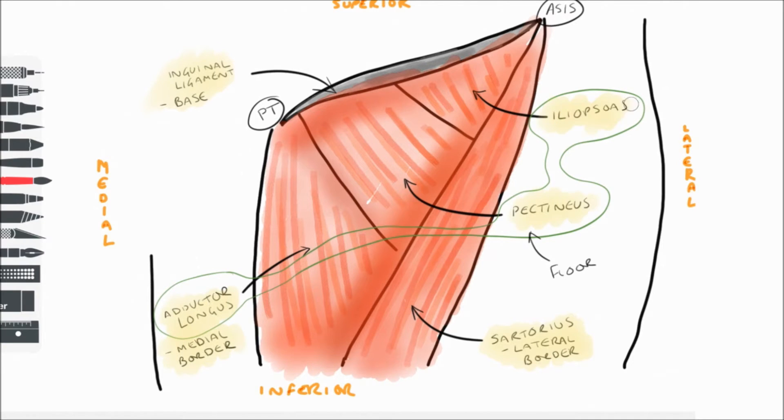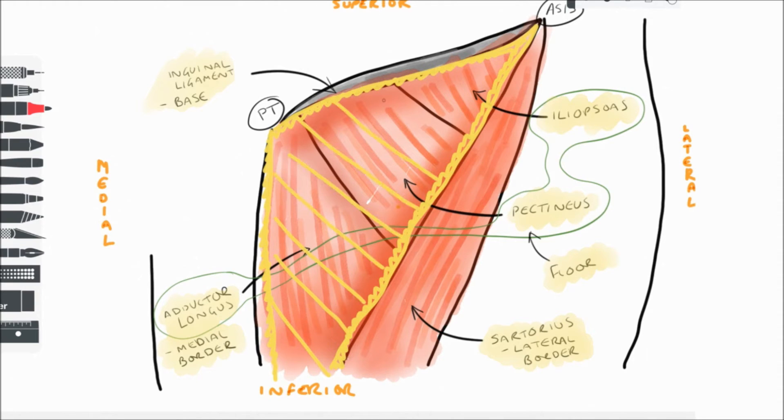To fully define the boundaries of the femoral triangle, I'm now going to add the specific landmarks. Notice that it is in fact the medial borders of both sartorius and adductor longus that form the boundaries specifically. And now we can appreciate the shape of the femoral triangle.